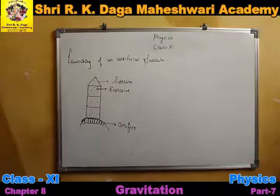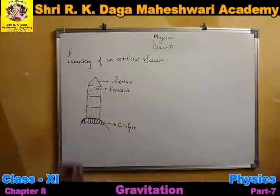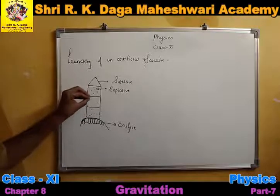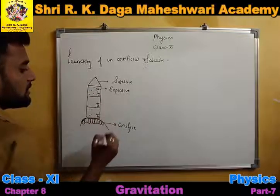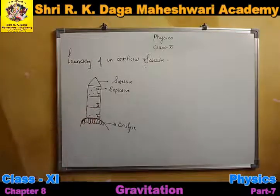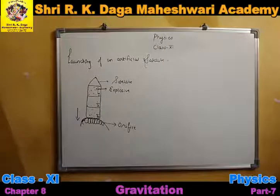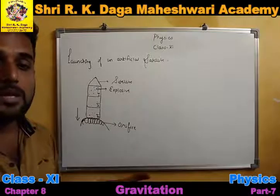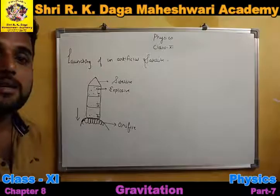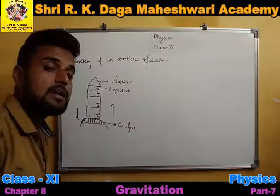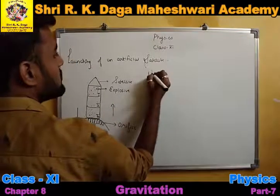Let us understand how this works. When we activate the explosive and cause an explosion, the gases get kinetic energy. There are three separate chambers — first, second, and third. The gases from the third chamber eject out first, applying a very large force in the downward direction. By Newton's third law, the forward force equals the reactional force, so when gases apply a large downward force, an equal upward force is applied, which we call up thrust.